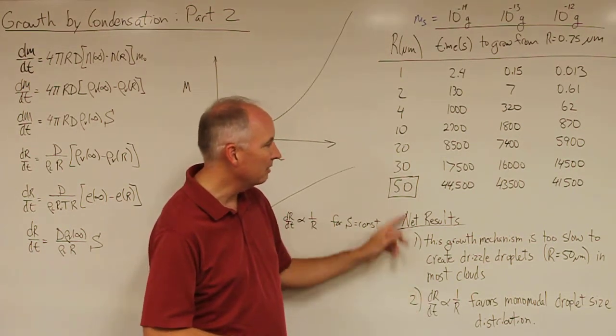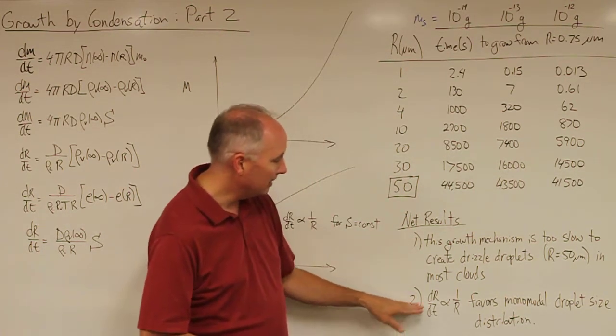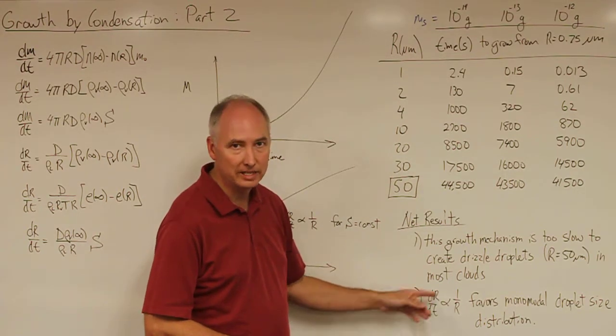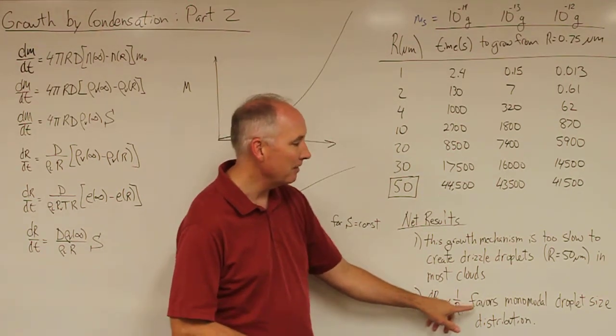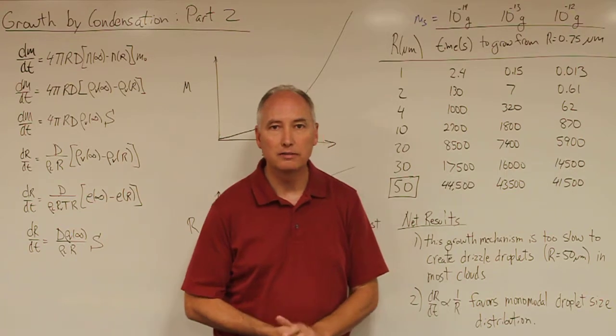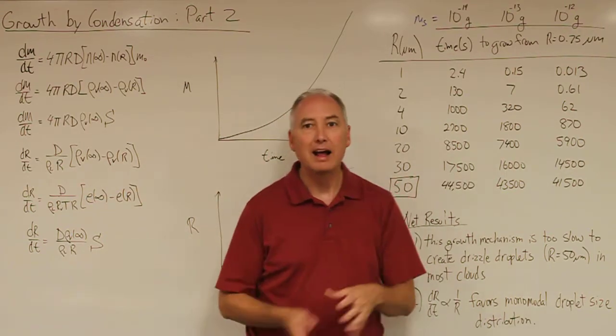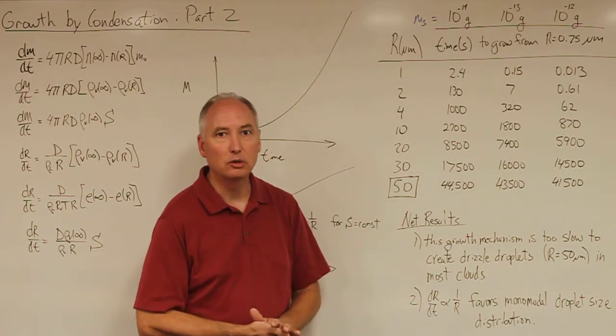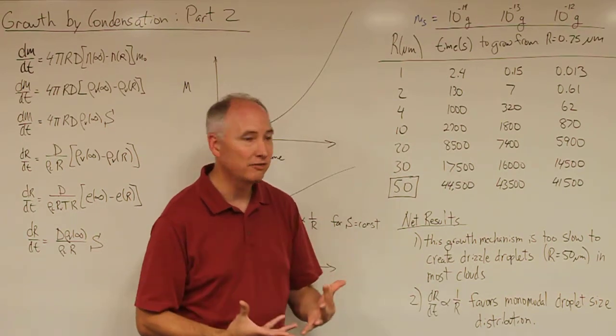And the second thing about this growth equations are that the growth rate dR/dt is proportional to one over R, and that favors the growth of the smaller droplets and the larger droplets are not growing as fast.